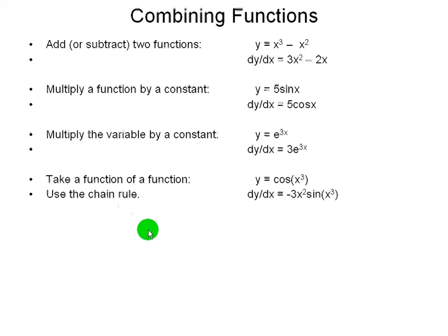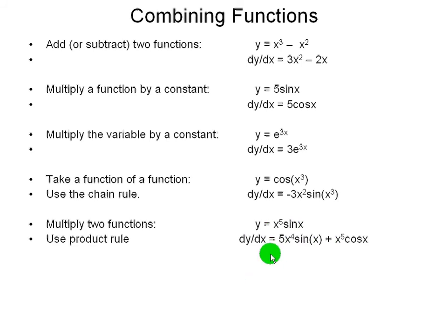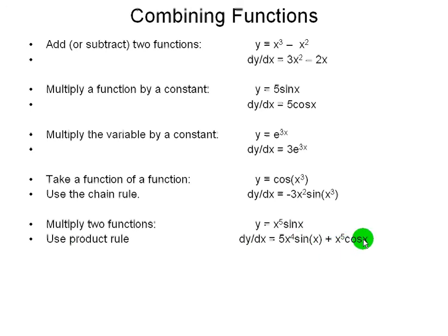The next way of combining functions is to multiply two functions together — for example, x to the fifth times sine x. When two functions are multiplied, we take the derivative of one and multiply it by the other function, then take the derivative of the other function and multiply it by the first, and add those two results together. This is called the product rule. So x to the fifth becomes 5x to the fourth — that's the derivative — multiplied by sine x, plus cosine x — the derivative of sine — multiplied by x to the fifth.